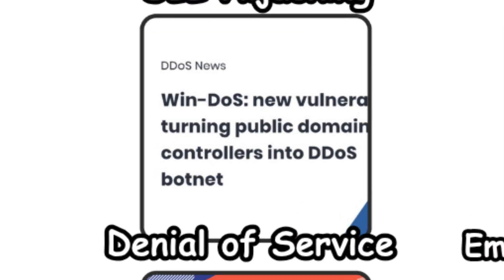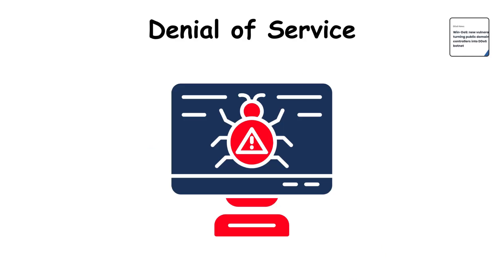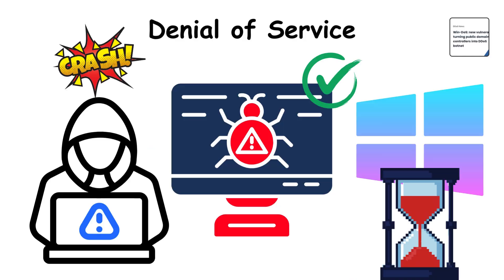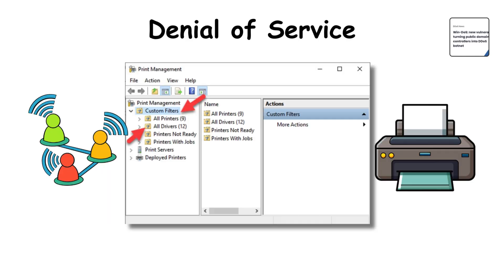Denial of service. Picture tapping a fragile object and watching the whole thing collapse. Some bugs allowed attackers to crash Windows instantly, triggering the blue screen of death. Network and printer drivers in early Windows 10 were known targets. A tiny nudge could bring the entire system down.